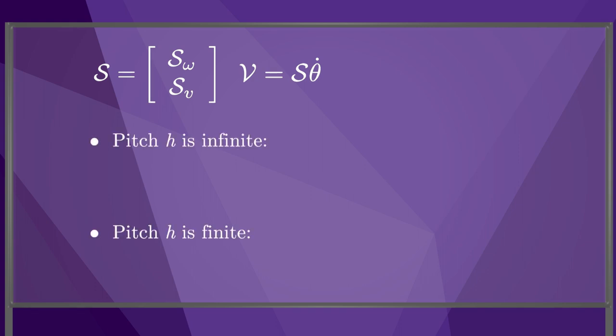If the pitch is infinite, the motion is a pure linear motion with no rotation. In this case, S omega is 0, Sv is a unit vector, and theta dot indicates the linear speed.